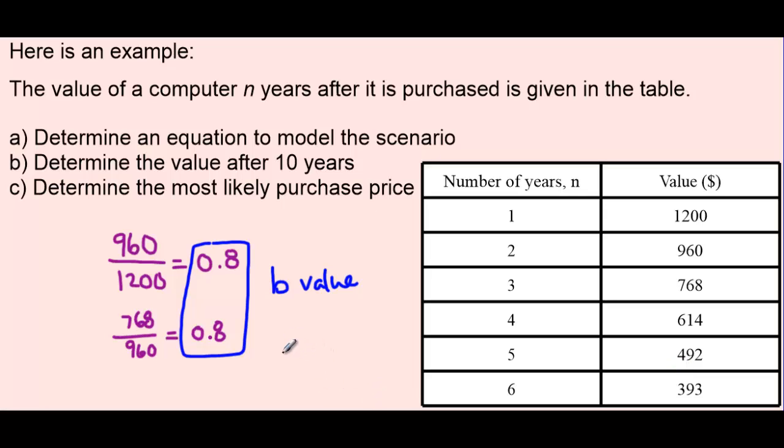It turns out that all of these do have a rate of decay that's pretty close to 0.8. So as it stands right now, our equation can look like this. V at n equals some initial value which we don't know yet, a B value which is 0.8, and of course, an exponent x. And the only thing we don't know yet is this A value.